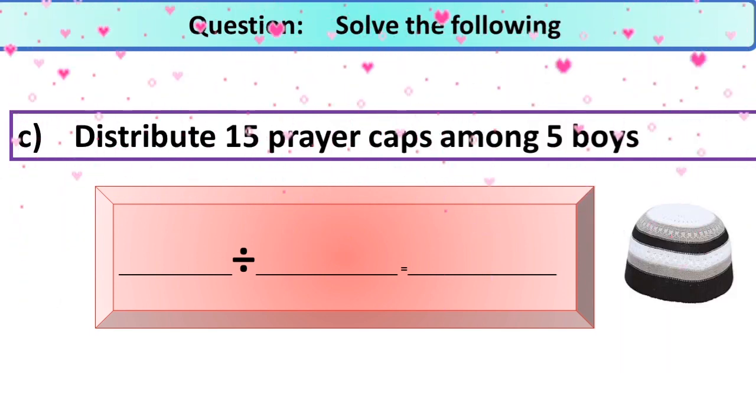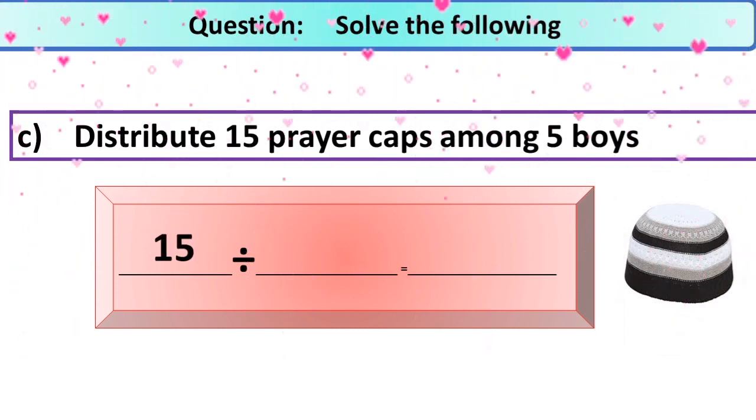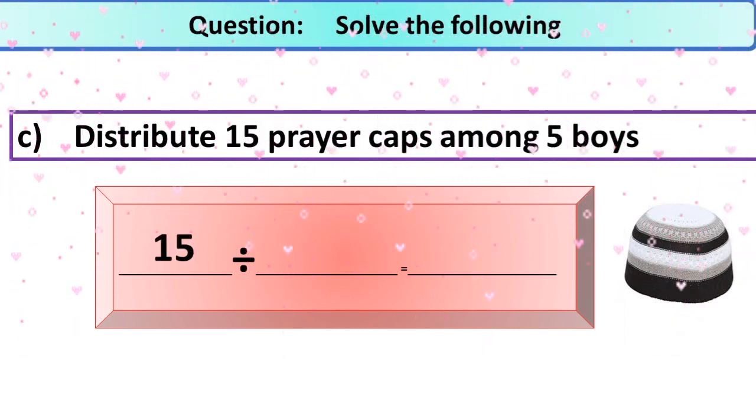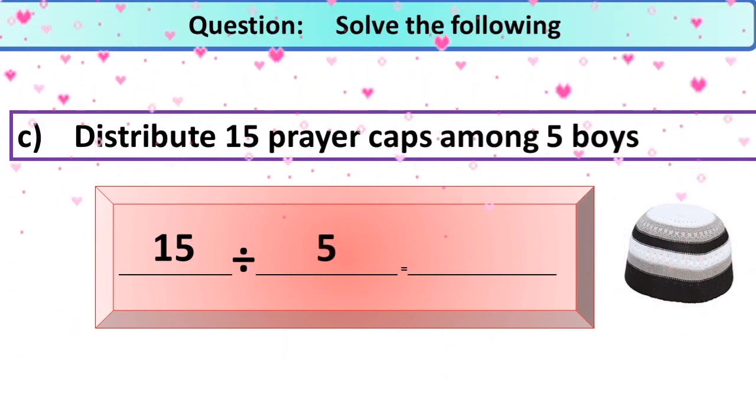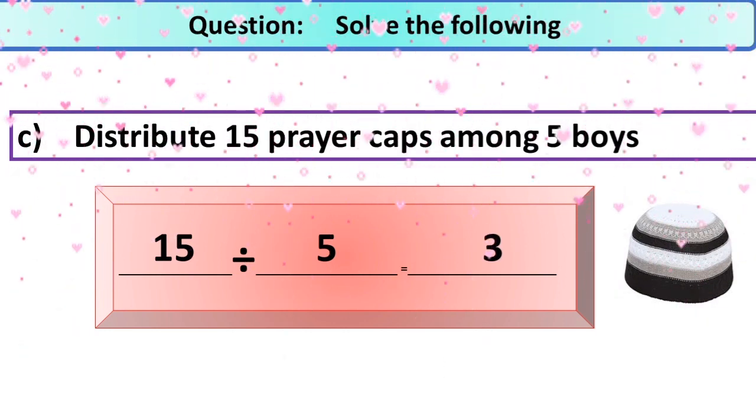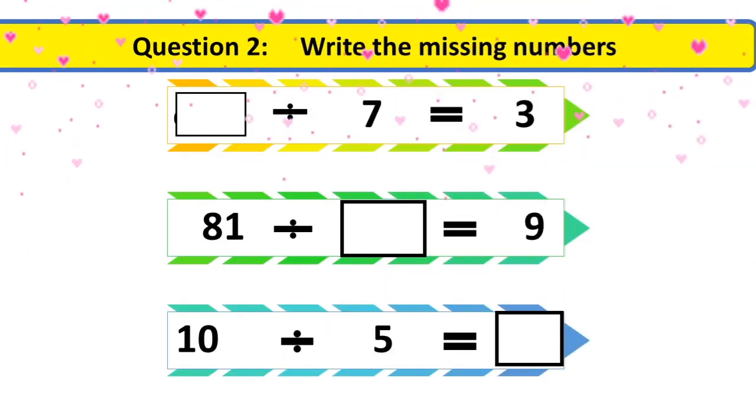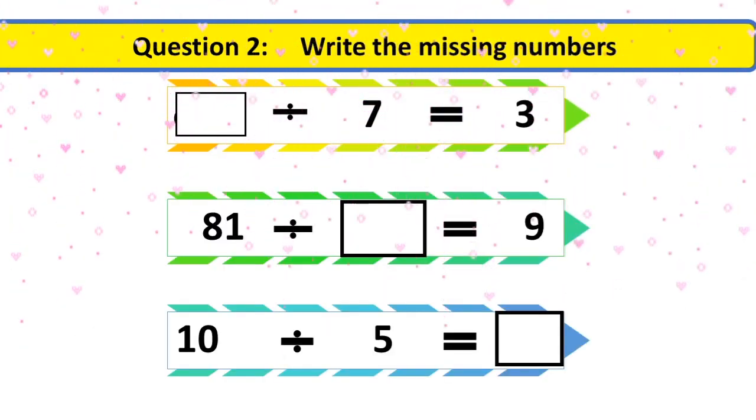The next part: distribute 15 prayer caps among 5 boys. So here 15 divided by 5. Simply you know that you are going to read the times table of 5. 5 ones are 5, 5 twos are 10, and 5 threes are 15. So here you are going to write 3. It means that each boy got 3 prayer caps. Now look at here, question 2: write the missing number.